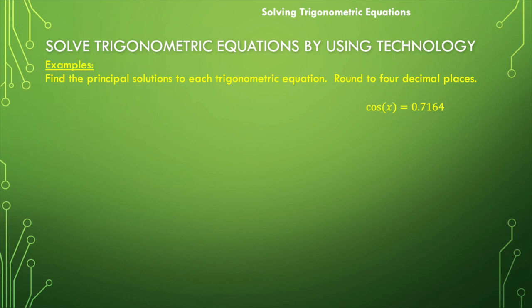We're going to walk pretty quickly through this one. We're going to take the inverse cosine function, the arc cosine, or the cosine inverse of both sides. And we would get x is equal to cosine inverse of 0.7164. Use your calculator and crunch that.